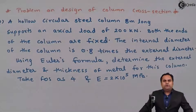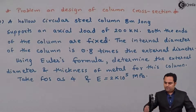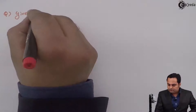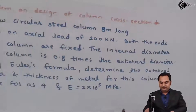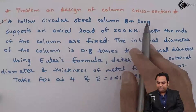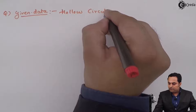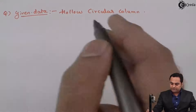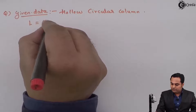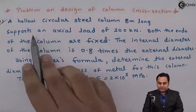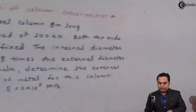Hello friends, in this video we are going to see a problem in which we are going to design the dimensions for a given column. It is given that a hollow circular steel column is 8 meters long, so the type is a hollow circular column. The length of the column is 8 meters, that is 8000 mm.